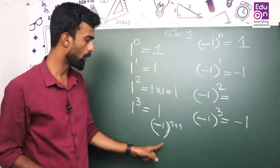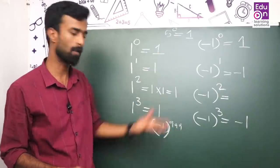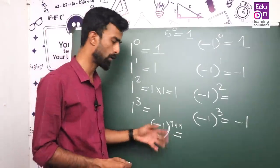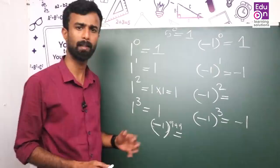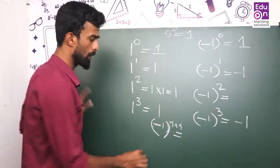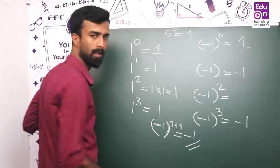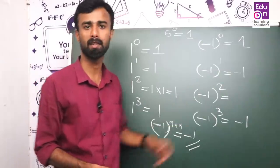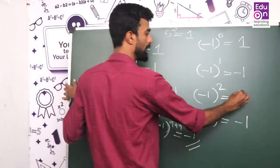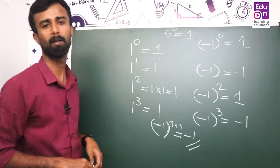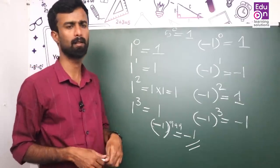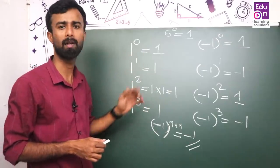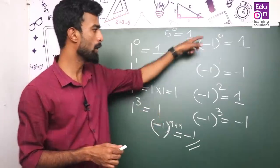1 whole raised to 999 — minus 1 raised to 999 equals minus 1. Here we have minus 1 raised to an odd power, which equals minus 1. So minus 1 whole raised to 999 equals minus 1. This is very easy — it is very basic.